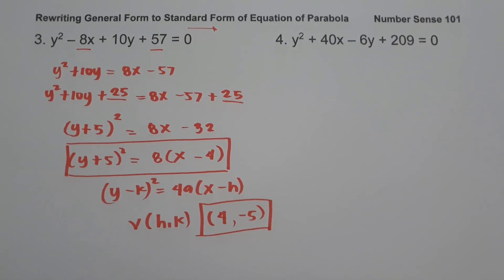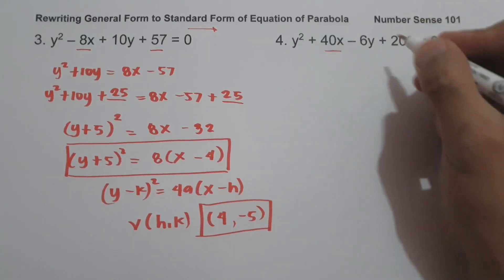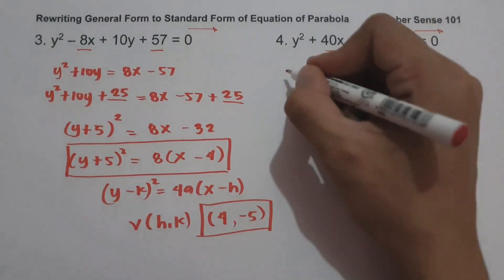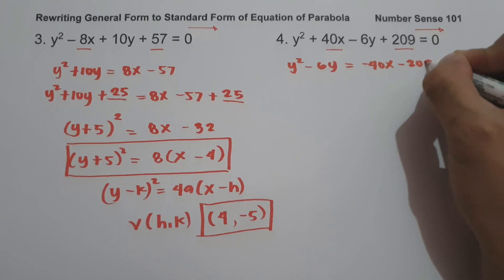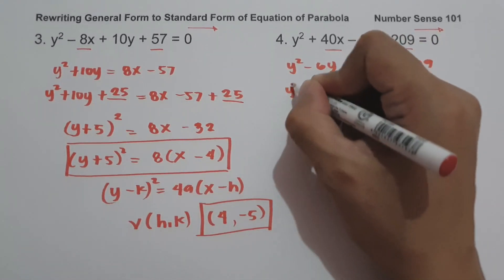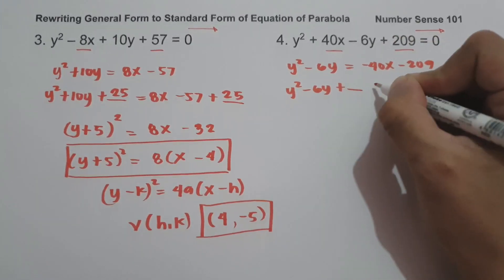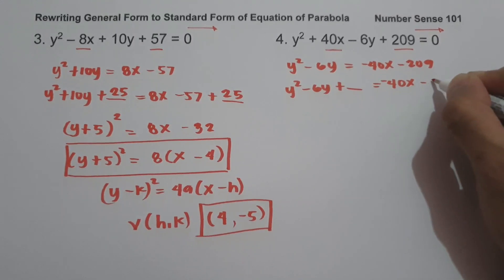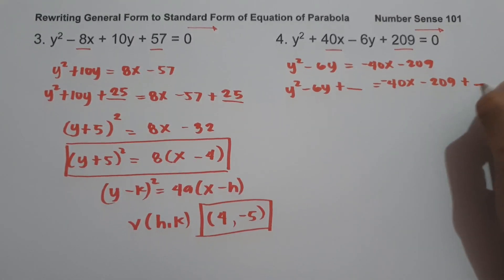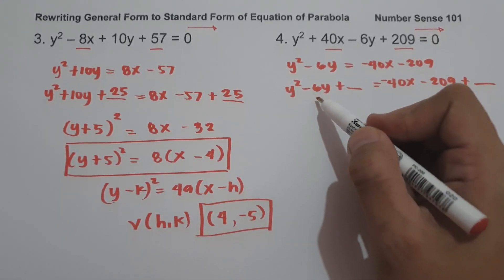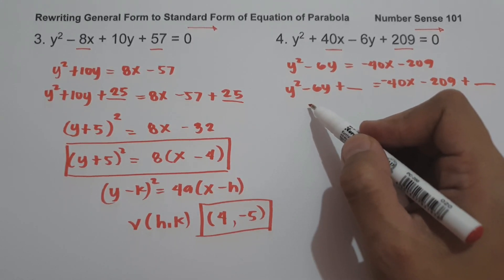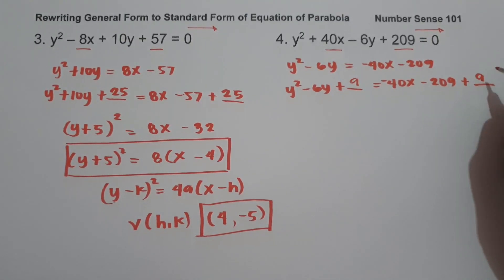On number 4, we have y² + 40x - 6y + 209 = 0. To convert this into standard form, let us move 40x and 209 to the other side. We have y² - 6y + ___ = -40x - 209 + ___. To make a perfect square trinomial: -6 ÷ 2 = -3; (-3)² = +9. Add 9 to both sides.